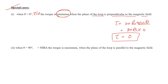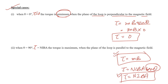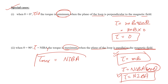When theta equals 90 degrees, what is the tau value? Tau = m B sin 90° = m B × 1 = m B. We can also write this as tau = n I B A, since sin 90° = 1. The torque is maximum when the plane of the loop is parallel to the magnetic field. So tau maximum = n I B A.